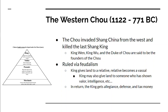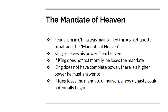It's all done through legal contracts. In exchange for being given land, the vassal gives his allegiance to the king, pays taxes, and defends the king's lands. The Western Zhou also came up with the idea called the Mandate of Heaven — the first Chinese use of heaven as a concept. Basically, the king gets his powers from heaven, meaning there is a higher power the king must answer to.